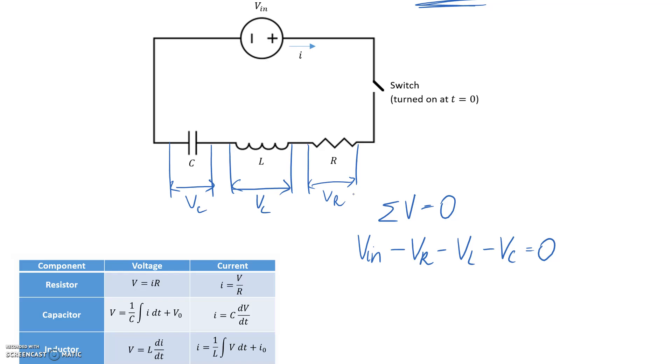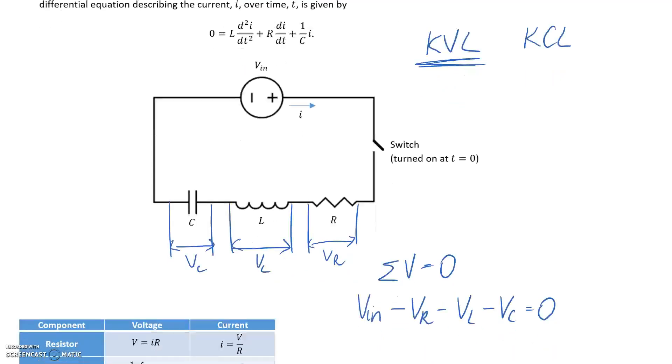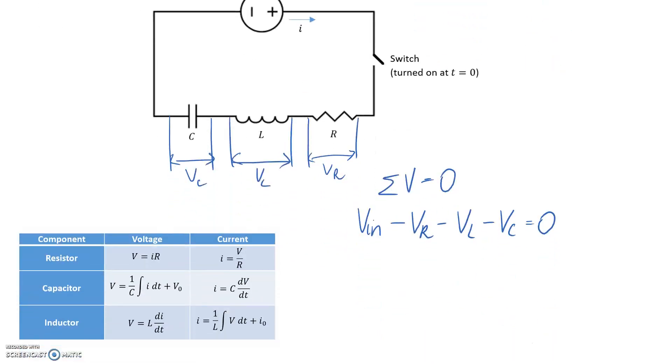Now that we've got this equation, we want to convert it into something that's in terms of the current I that we're looking for. So how we can do that is if we look at this table, we can see that we can write voltage in terms of current for each of these components. So that's what I'm going to do. Now V_in, there's not much I can do about that at the moment, so I'll just leave it.